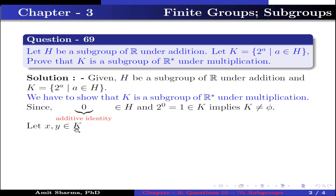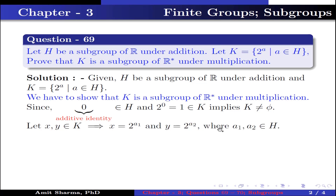Let x, y belong to k. This implies x = 2^a1 and y = 2^a2, where a1, a2 belong to h.